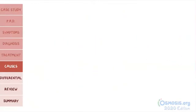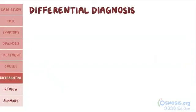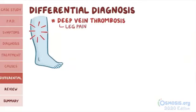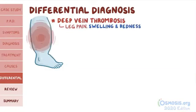Next are important mimickers of peripheral artery disease that should be on your differential diagnosis list. First is deep vein thrombosis, which can also present with leg pain. However, deep vein thrombosis is usually associated with leg swelling and redness, and individuals have risk factors such as immobility and hypercoagulability.